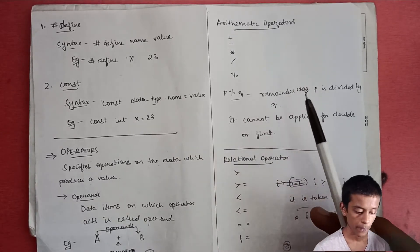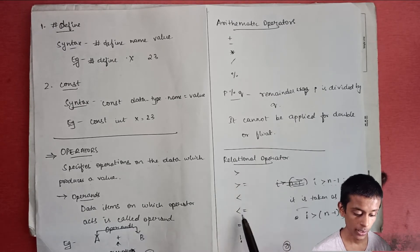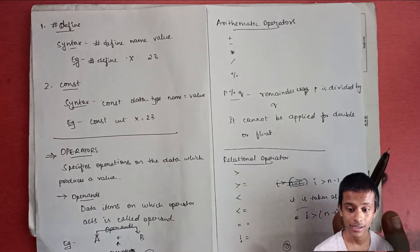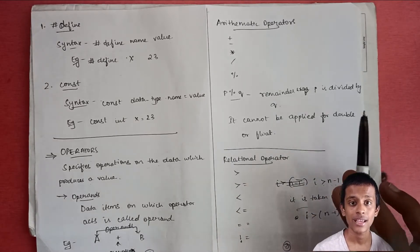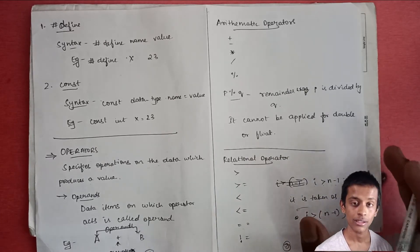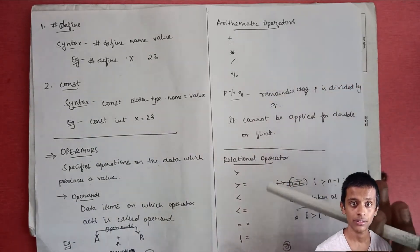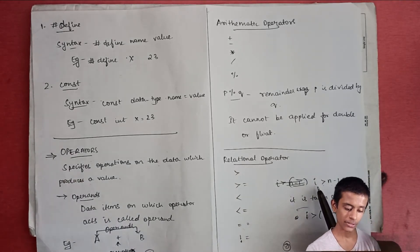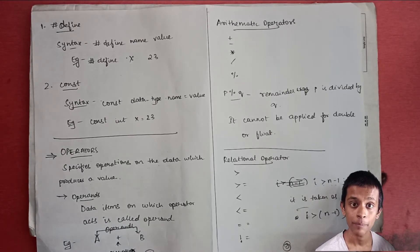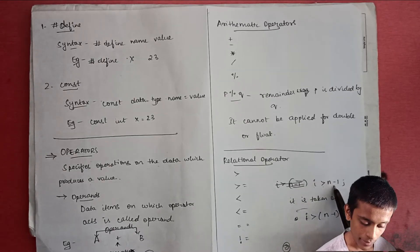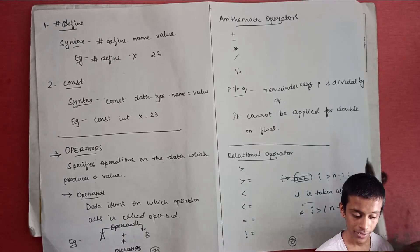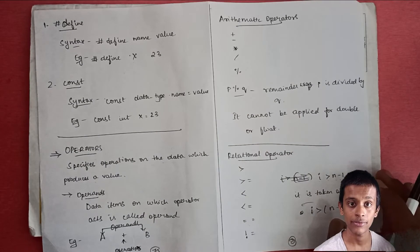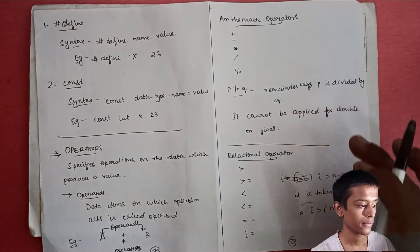Next, the relational operators: greater than, greater than or equal to, less than, equal to (==), and not equal to. These have lesser precedence than arithmetic operators. If you use both together, the compiler first evaluates the arithmetic operation, then the relational operator. For example, in 'i > n - 1', the compiler takes it as 'i > (n - 1)' — first 'n - 1' is calculated, then the relational operator is considered.